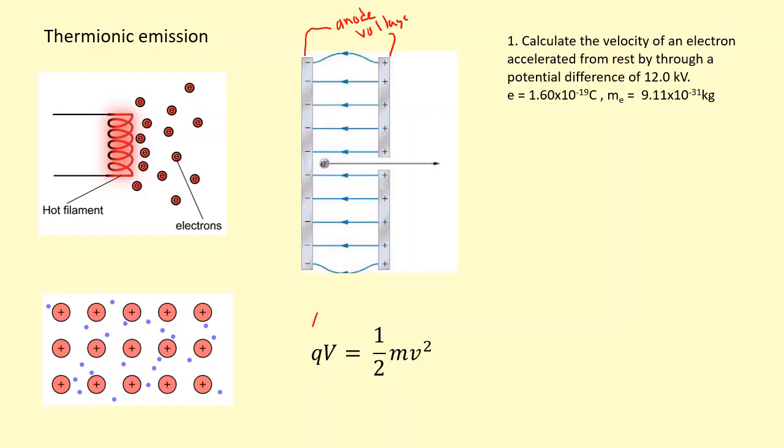Which gives us the work done or the energy from the electric field, and that's going to turn into kinetic energy. So we have that equal to half mv squared. I'm going to calculate the velocity of this electron which has been accelerated from rest by a potential difference of 12 kilovolts.